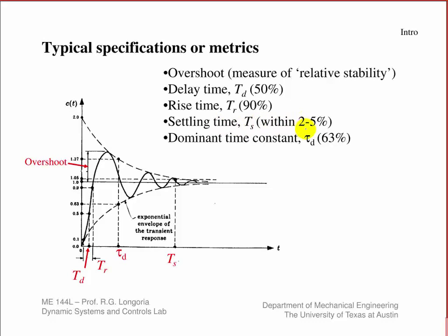Settling time also can have a specific designation. For example, you may ask how long does it take to settle within 2%, say 5% within that value. You might be within 5% after so much time. So here might be a settling time of 5% because you've come within 5% of the final value. And finally, the system may have a dominant time constant that's important.